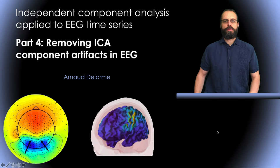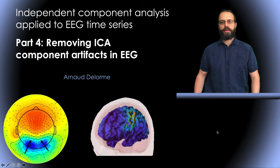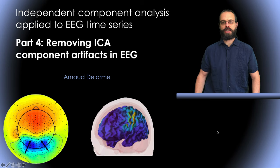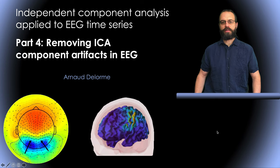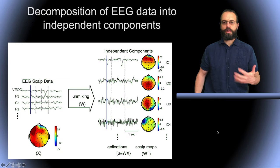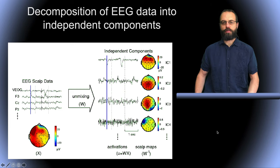Hello, my name is Arnold Delorme and this is Part 4, removing ICA component artifacts in EEG, from the series on independent component analysis applied to EEG time series. Here I'm going to explain how you remove artifact components from EEG data.